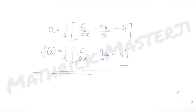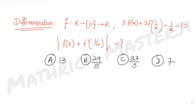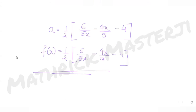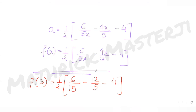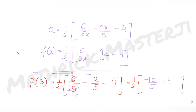The question asks for f(3) and f'(1/4). To find f(3), substitute x = 3: f(3) = (1/2)[6/15 - 12/5 - 4] = (1/2)[2/5 - 12/5 - 4] = (1/2)[-10/5 - 4] = (1/2)[-2 - 4] = -3.